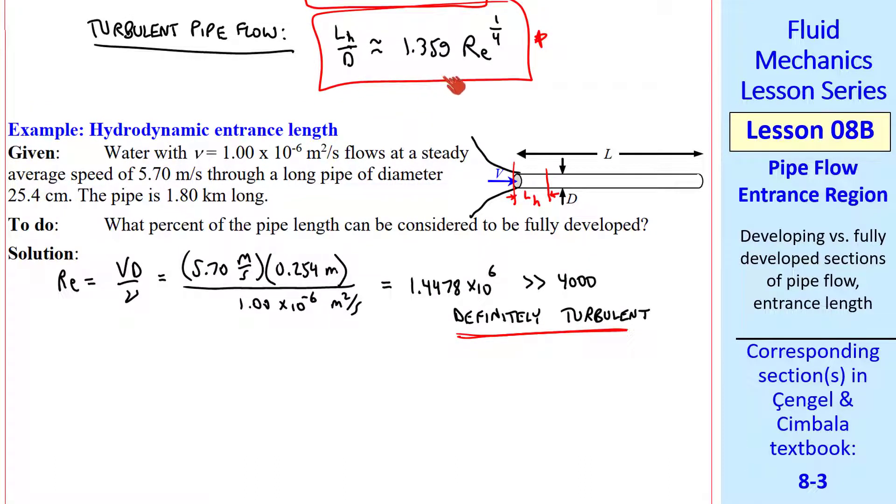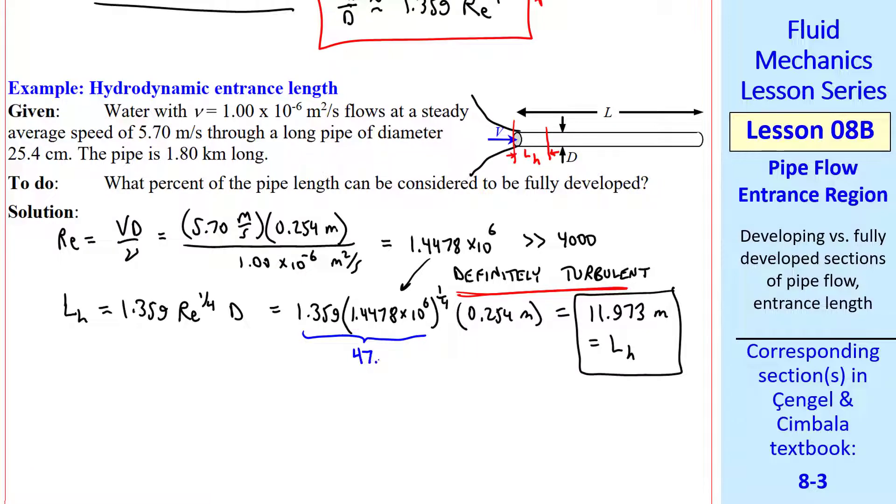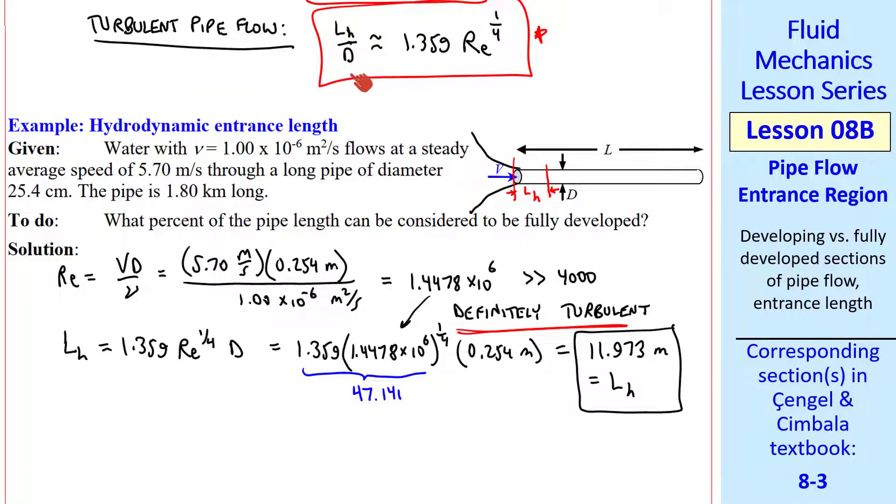And thus we use this empirical equation. We write it as L_h equals 1.359 Reynolds number to the fourth times d. We plug in our Reynolds number and our diameter, and we get L_h is 11.973 meters. By the way, this quantity turns out to be 47.141, which is L_h over d in this equation. In other words, the entrance length is approximately 47 pipe diameters.